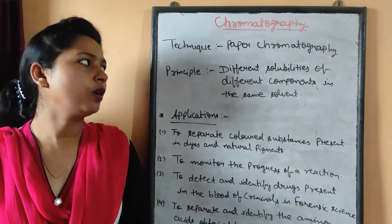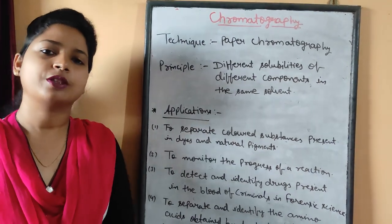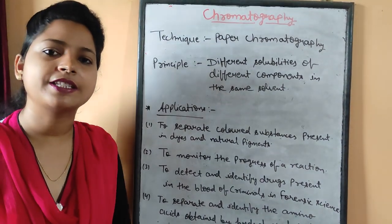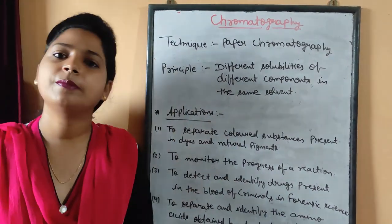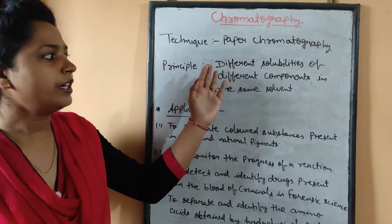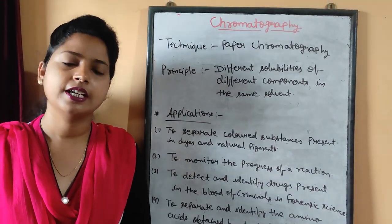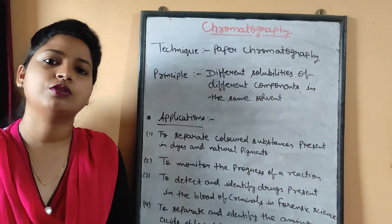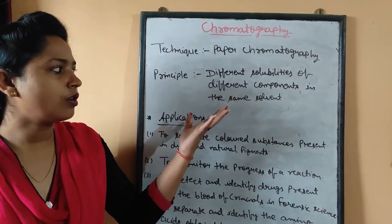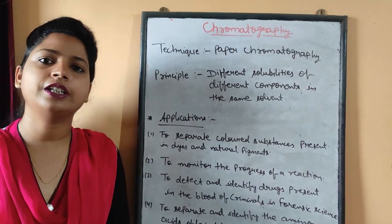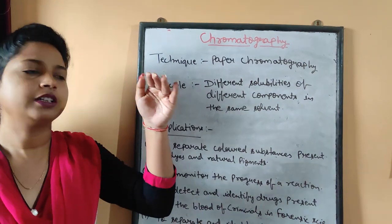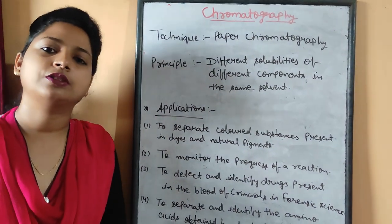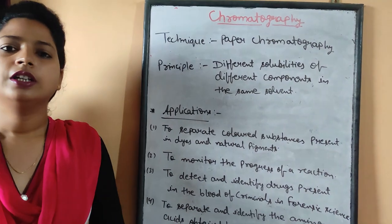Paper chromatography is used to separate the different colors or pigments present in a specific color. The principle behind it is the different solubilities of different components in the same solvent. Since a dye is a mixture of various colors, when we dissolve that dye in a liquid, the different colored components will have different solubilities, causing them to appear at different locations on the paper, and on that basis we can separate them.